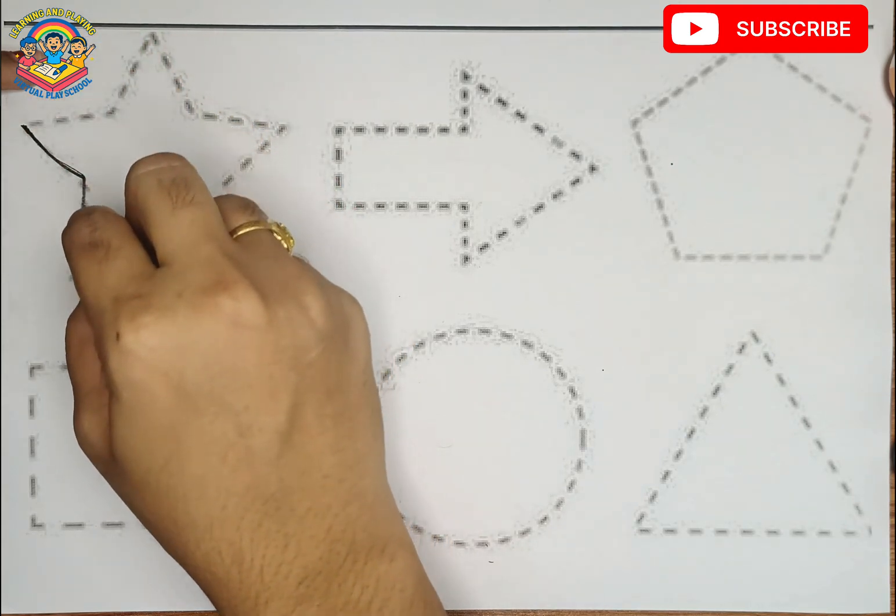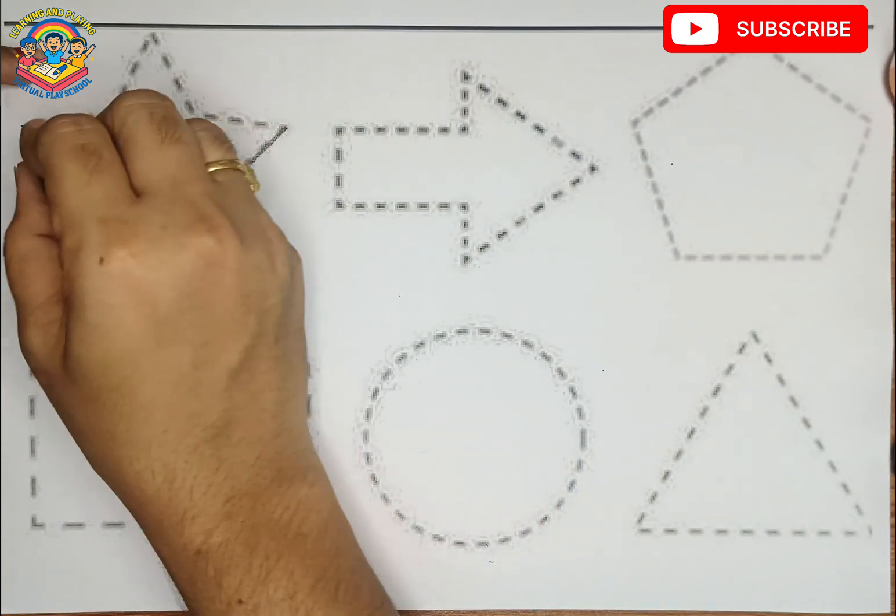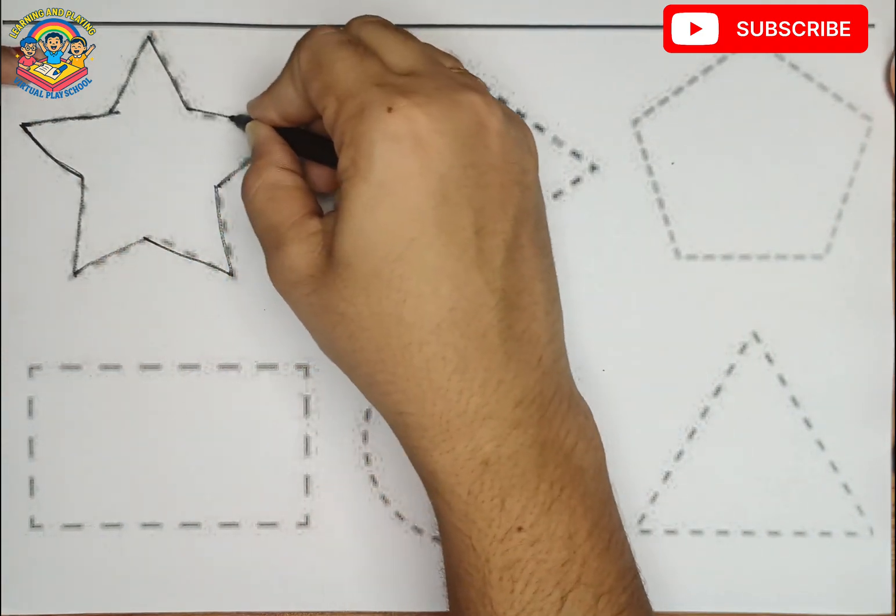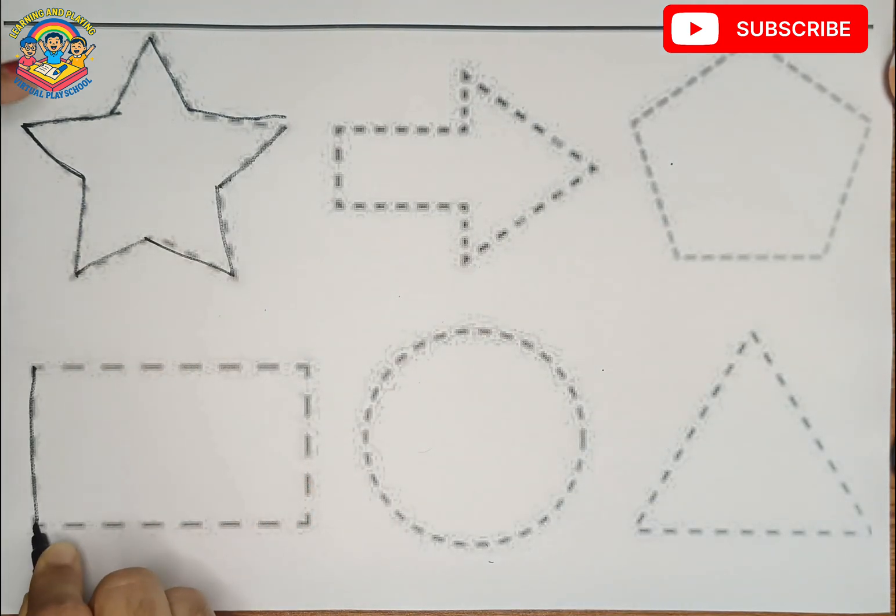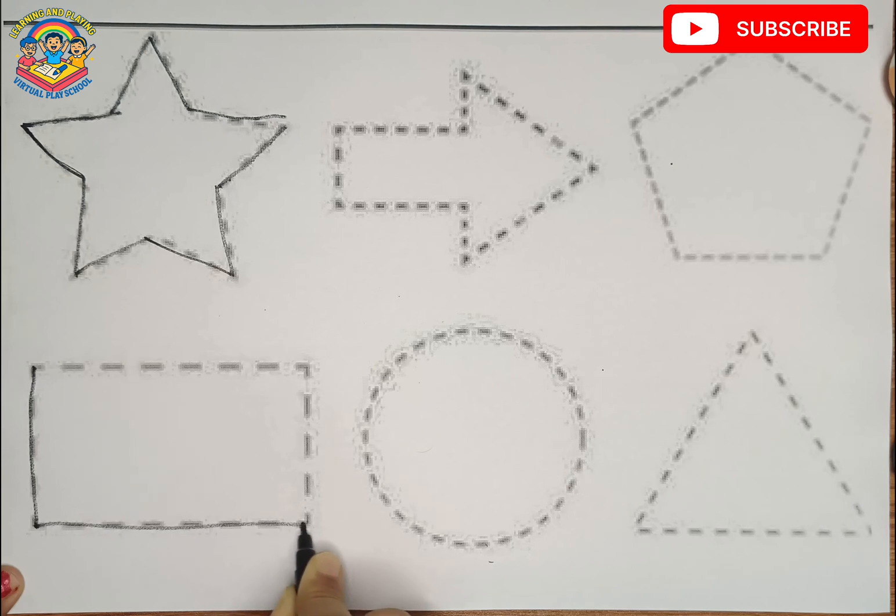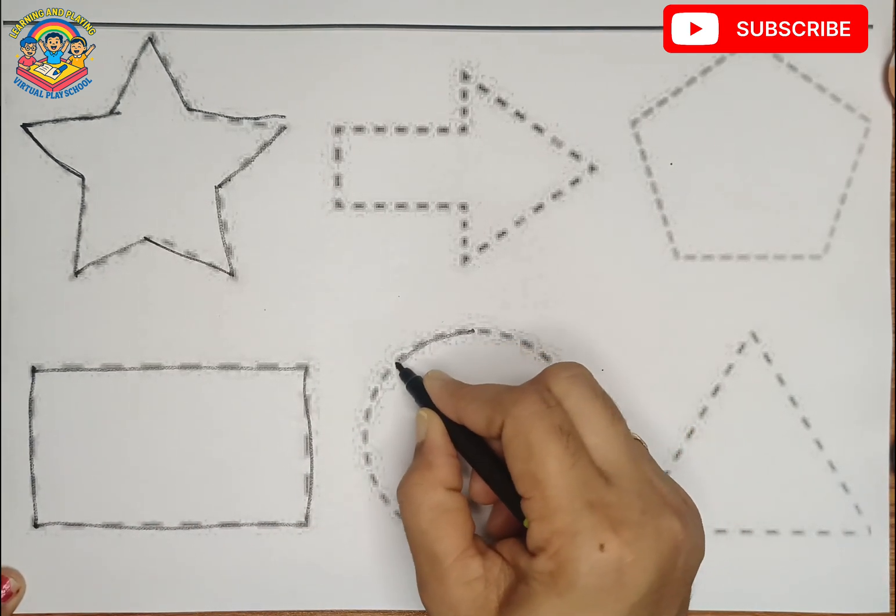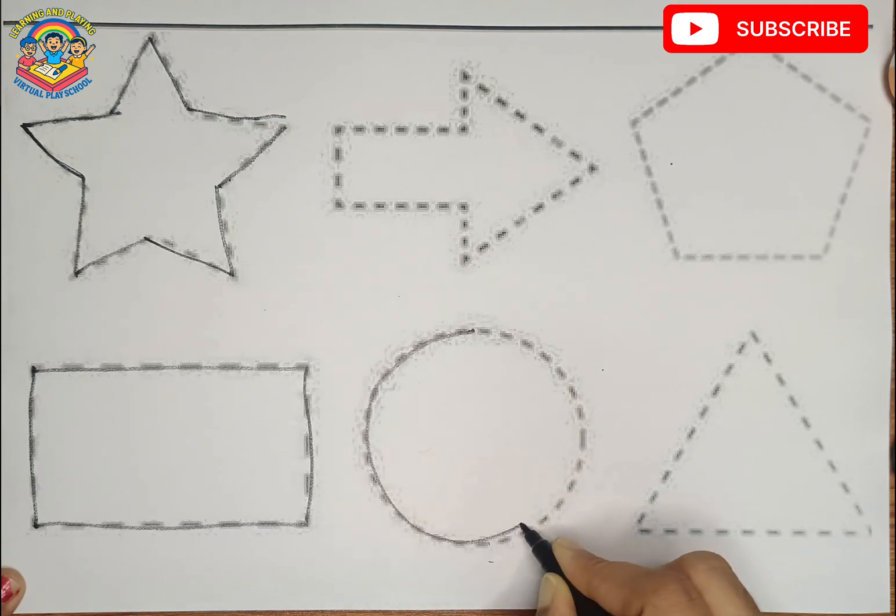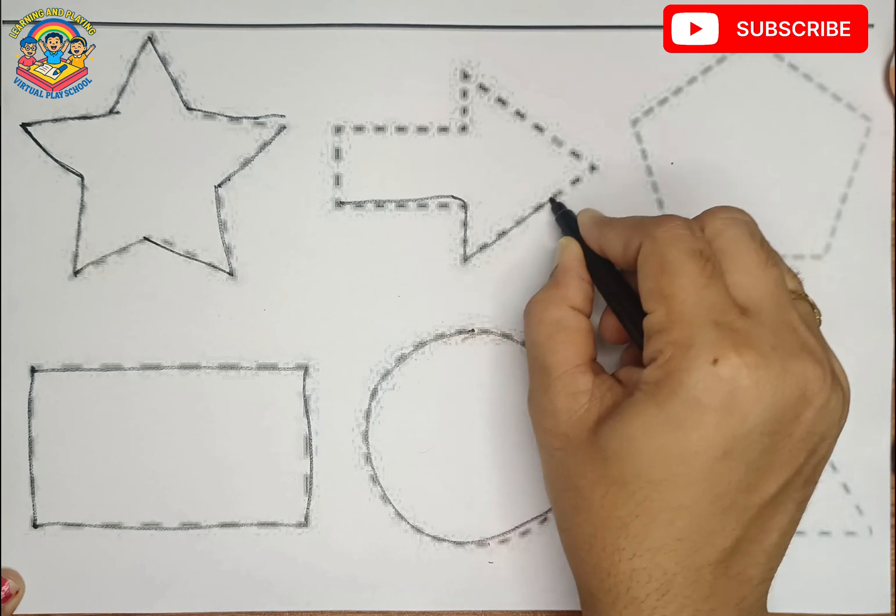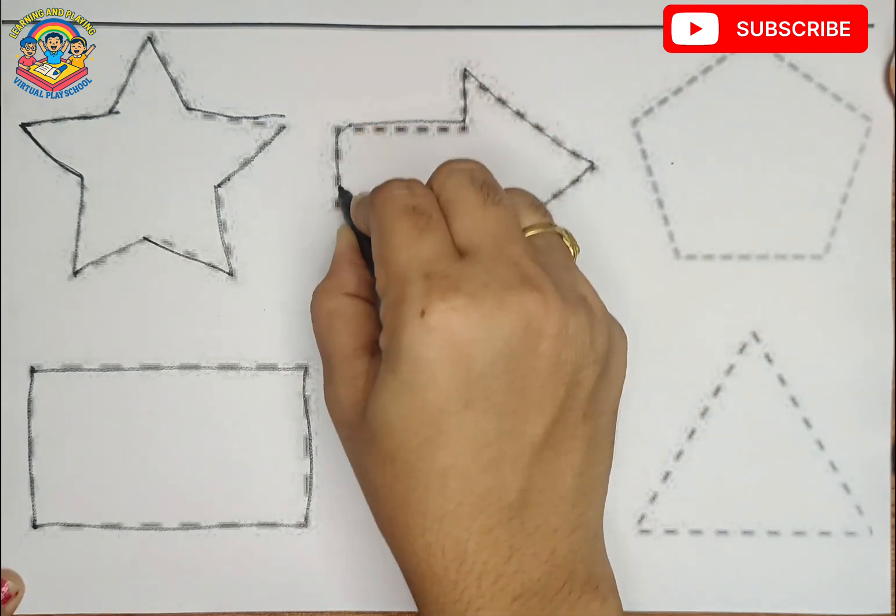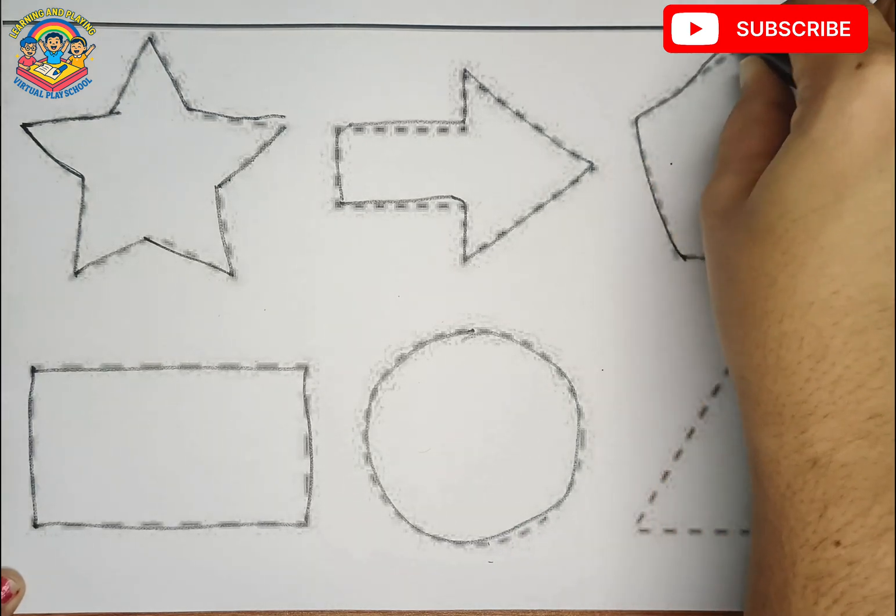This is rectangle, circle, arrow. What is this kids? This is arrow. Pentagon, triangle. What is this kids? This is triangle.